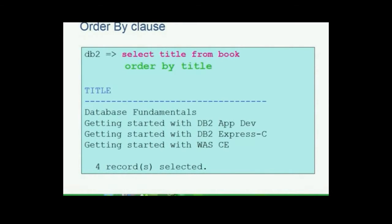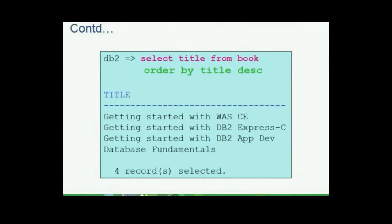Take a look at this one: SELECT title FROM book ORDER BY title. We have used ORDER BY on the column title to sort it. By default it sorts in ascending order. To sort in descending order we just use the keyword DESC. The result set would now be sorted according to the column specified and in descending order.